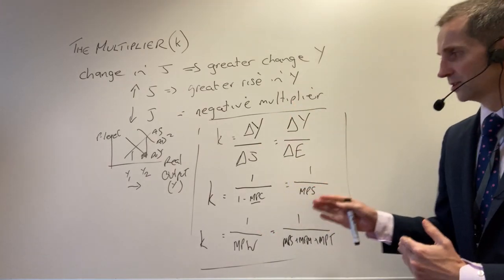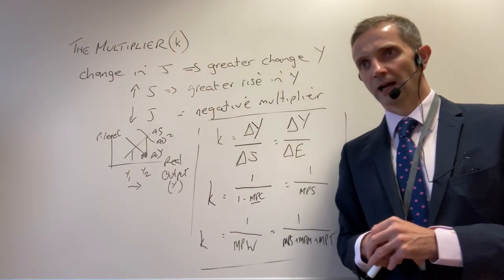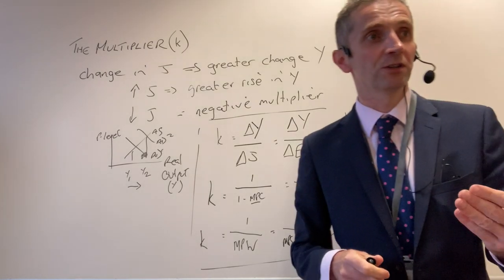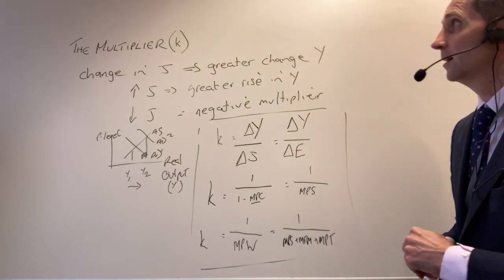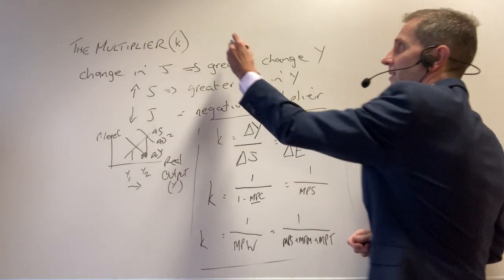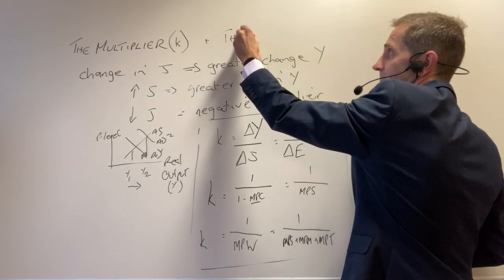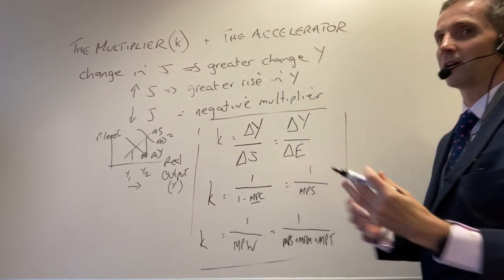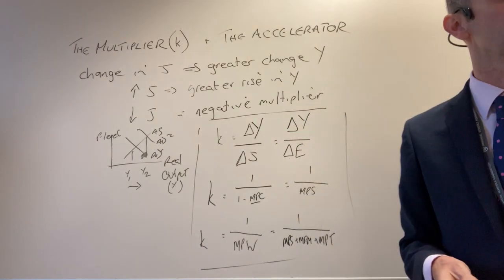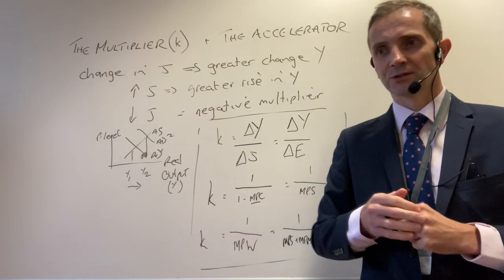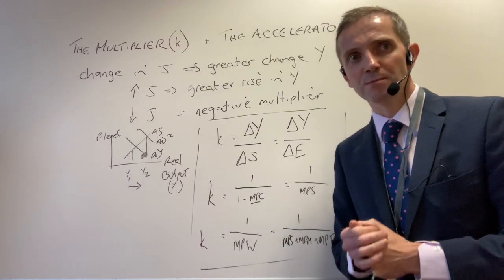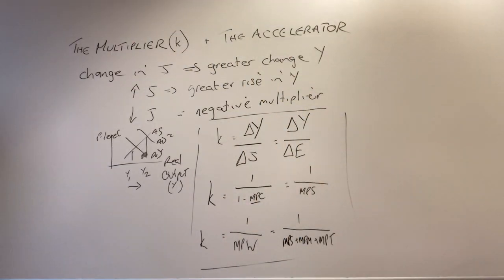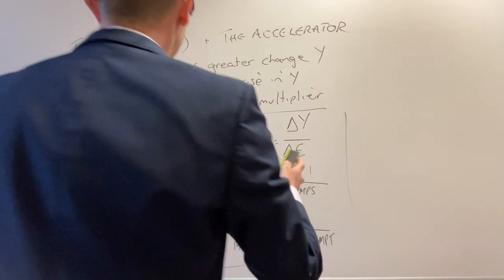Now we're going to complete the circle, because the multiplier interacts with the accelerator. That's why in your textbook the chapter is called 'The Multiplier and the Accelerator' — chapter 21. In previous lessons we spent a lot of time on the multiplier; now let's look at the accelerator.